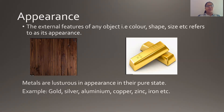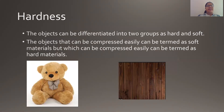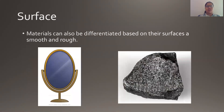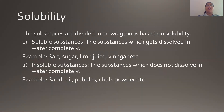The first property was appearance. We divided materials into two types based on their appearance: shiny materials and dull materials. Next, we divided materials based on their hardness, that is soft or hard. Next, based on their surface, that is smooth surface or rough surface. So today we are going to differentiate materials based on their solubility.